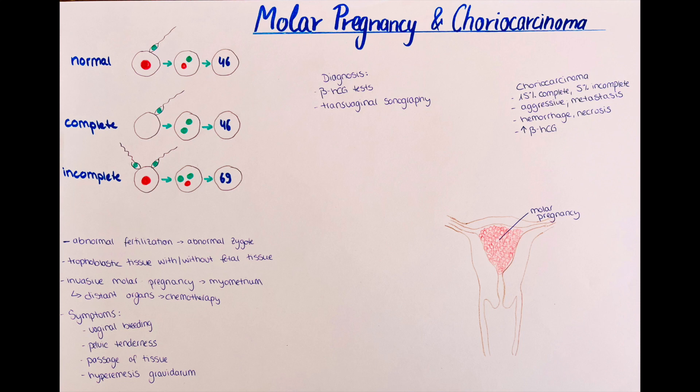After therapy, HCG levels must be checked weekly. If two consecutive measurements are negative, HCG levels can then be checked monthly, with a control window of usually six months. If HCG levels remain elevated, another curettage must be considered, as this may indicate that tissue has remained inside the uterine cavity.